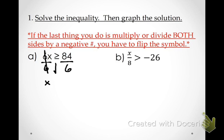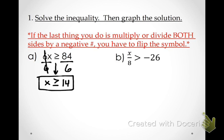I'm going to bring down my inequality sign. What does that inequality sign say? Less than or equal to — it does not say less than. 6X is greater than or equal to... what's the number? 14. Now let's look: was the last thing that we did multiply or divide by a negative number? No. So I'm going to leave it alone — that's my answer. X is greater than or equal to 14. It's very important that you know how to read these things.